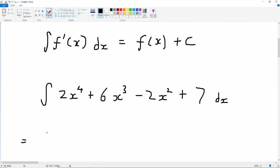So that's going to be, so we've got our 2x, so the 4 becomes a 5, and then we divide by 5. And now we can add to that. We've got our 6x, and the cubed then becomes to the power of 4, and we divide by 4.